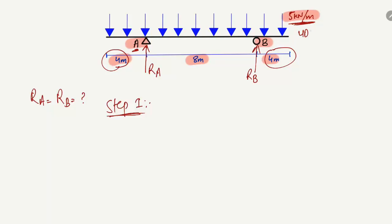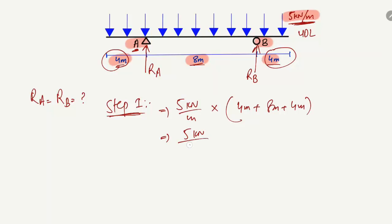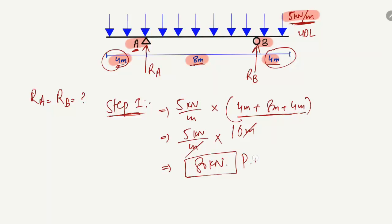Step 1: Multiply the uniformly distributed load with the total length of the beam. The UDL is 5 kN/m, and the total length is 4 + 8 + 4 = 16 meters. Multiplying 5 kN/m by 16 meters, the meters cancel out and we get 80 kN. This 80 kN is the equivalent concentrated or pointed load for the entire UDL.